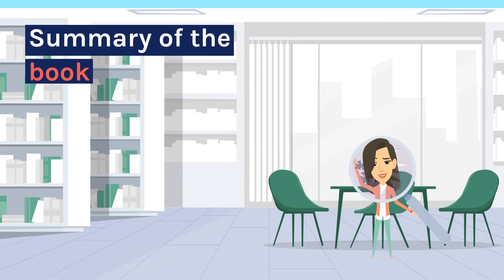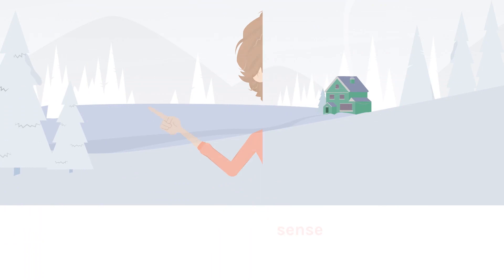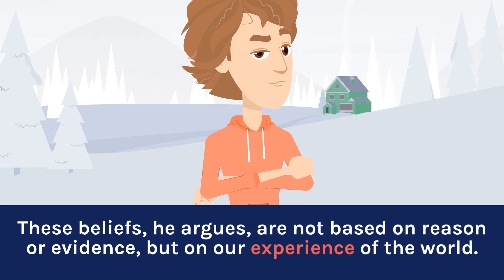In 'A Defense of Common Sense,' G.E. Moore sets out to defend the notion of common sense against what he saw as the growing skepticism of his day. He begins by defining common sense as a body of beliefs that we all share about the world and our place in it. These beliefs, he argues, are not based on reason or evidence, but on our experience of the world.